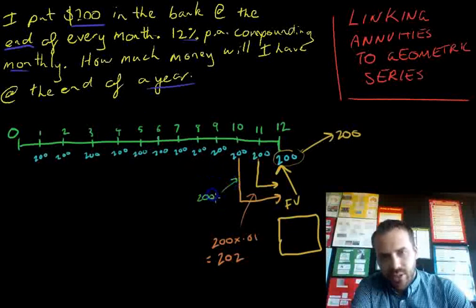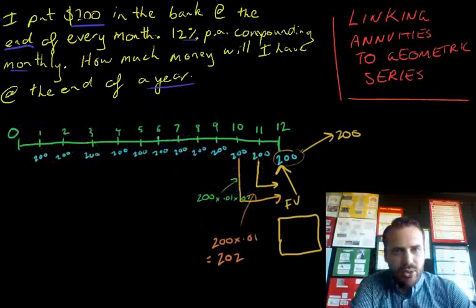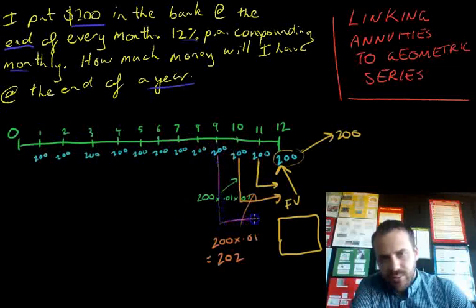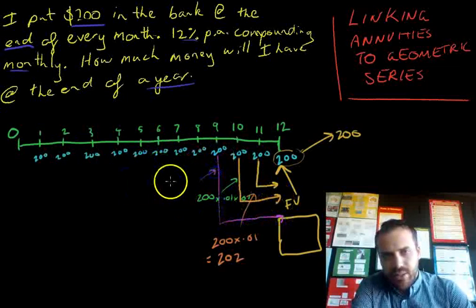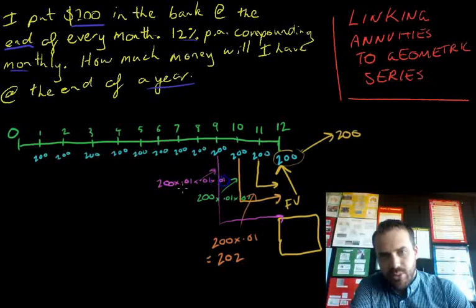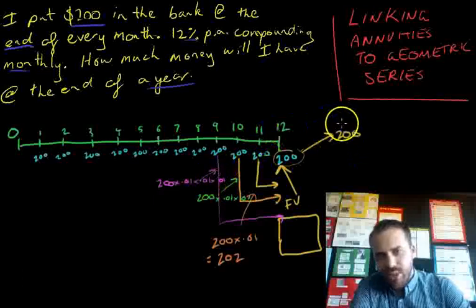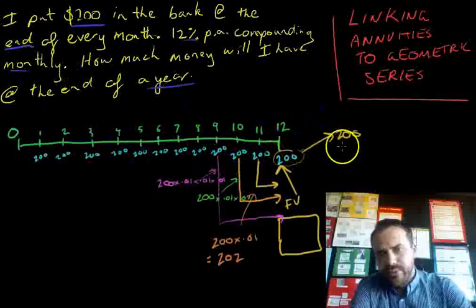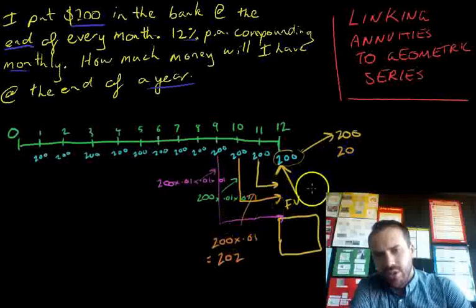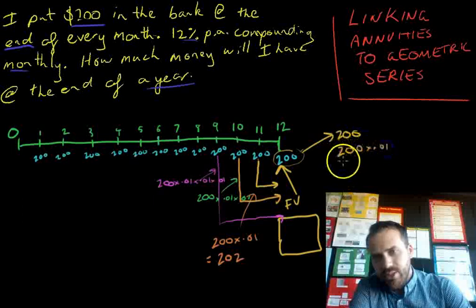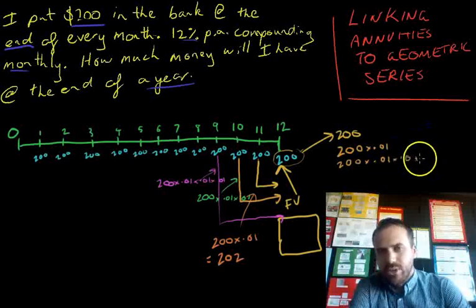Continuing on, the future value of the next 200 is going to be 200 times 1.01 times 1.01. And the one before that is 200 times 1.01 times 1.01 times 1.01. If I make a list: the first is 200, the next is 200 times 1.01, the next is 200 times 1.01 squared — let's go with that.